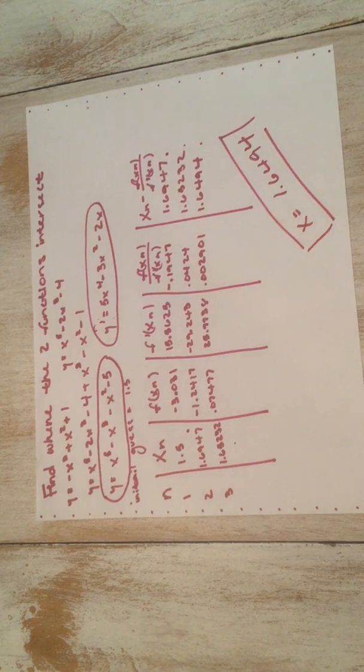We take 1.5 down and continue with the second iteration: plug 1.5 into the original function, then into the derivative, divide the two, and subtract from xn. We continue to a third iteration and see we are within 0.01 of each other, so that is the answer we were looking for. The full calculator answer is 1.414216.